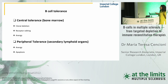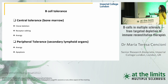B cell tolerance is the mechanism that reduces the probability of generating autoreactive B cells, and it is established at several checkpoints. We talk about central tolerance during the development of B cells in bone marrow, and peripheral tolerance in secondary lymphoid organs.